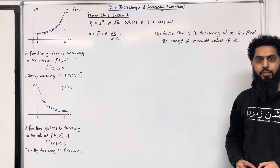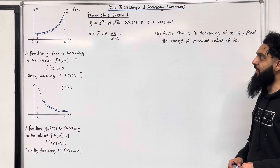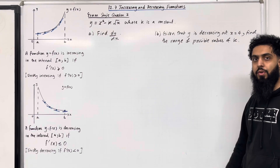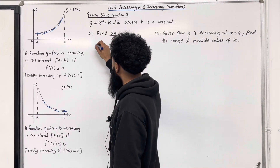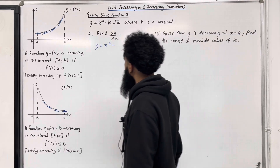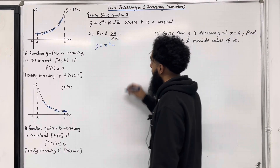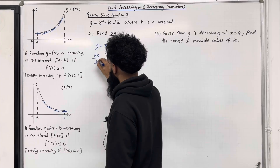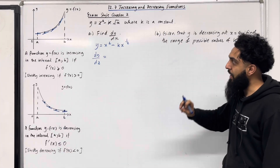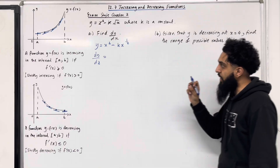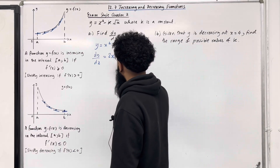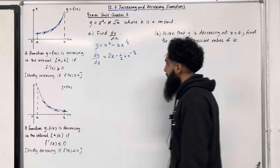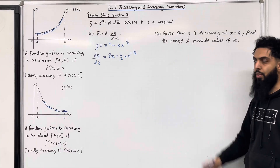Moving on to exam style question 2. y = x² - k√x, where k is a constant. Part A: find dy/dx. Before we differentiate, the second term can be rewritten as kx^(1/2). So dy/dx is given by bringing down the power, multiplying by the coefficient, and subtracting 1 from the power. The first term differentiates to 2x, minus the second term which differentiates to (1/2)kx^(-1/2). That completes part A of exam style question 2.